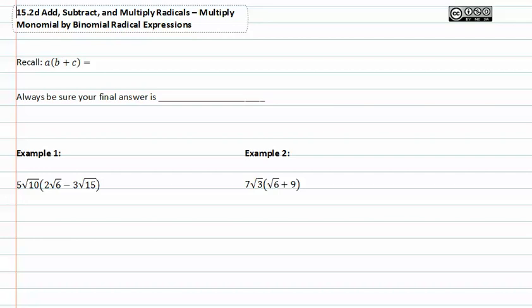When multiplying monomials to binomials, it's important to recall a specific thing about a value or factor in front of a grouping or something in parentheses.